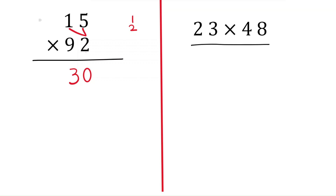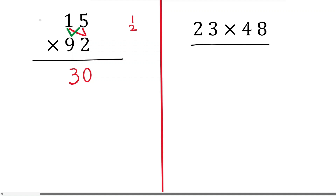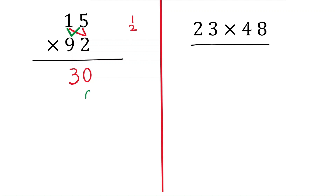Next, take the tens digit place — that is nine. Multiply nine with the other number's unit place and with the tens digit place. Since you are doing the tens digit, you have to put zero here and start writing from the tens digit onwards. Nine times five is 45, so write five here and four is the carryover.